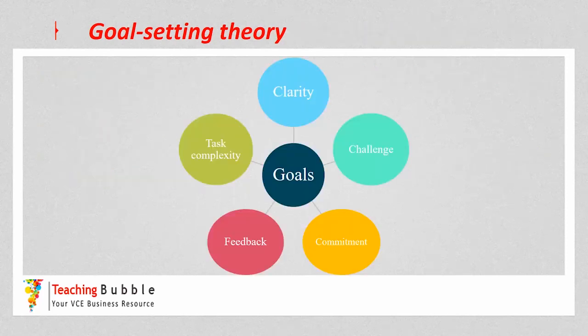The five attributes involved in goal setting in terms of Lock and Latham's theory are clarity, challenge, commitment, feedback, and task complexity. We're going to go through each one of those attributes individually so that you gain a really good understanding of Lock and Latham's theory.